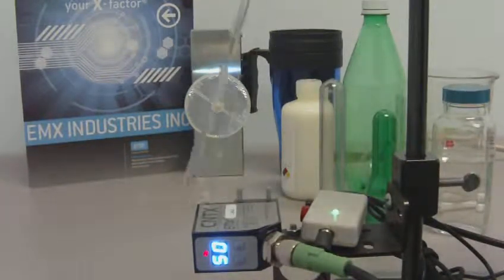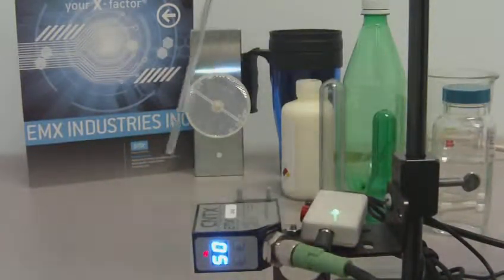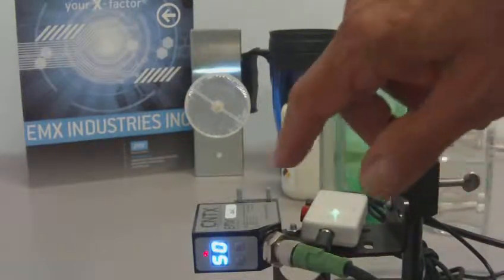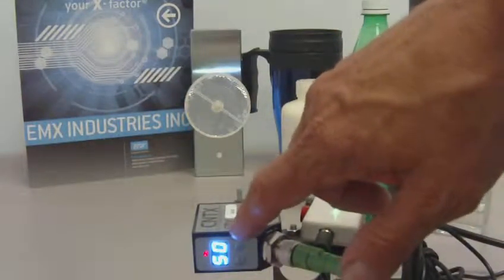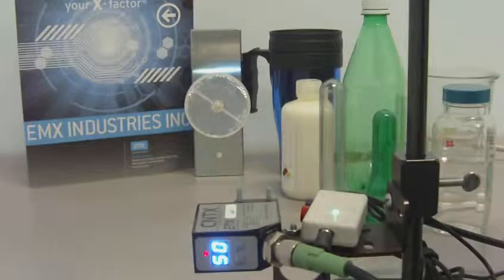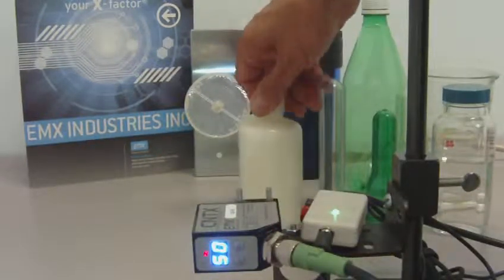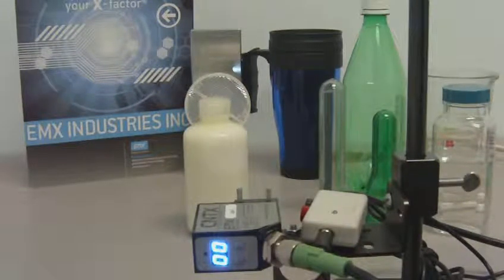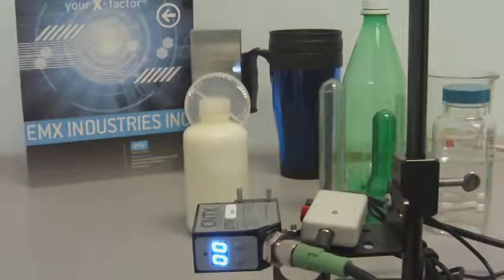Right now we're getting a very strong reflected signal from the reflector, registering on the sensor at a value of 50. We set a threshold at a value of 40, and we're going to pass various objects in between the sensor and the reflector to cause the sensor output to turn off.